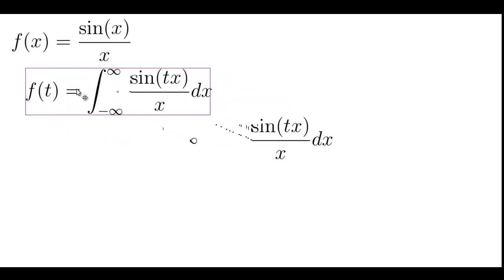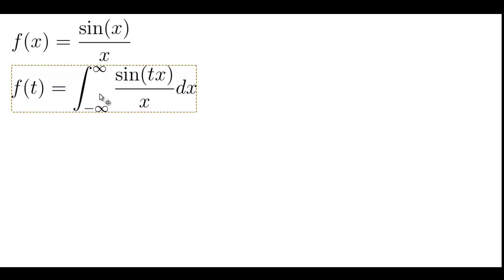What we're going to do with this is set up a new function which we will call f of t. f of t has an extra parameter, namely t, which does not appear in f of x.